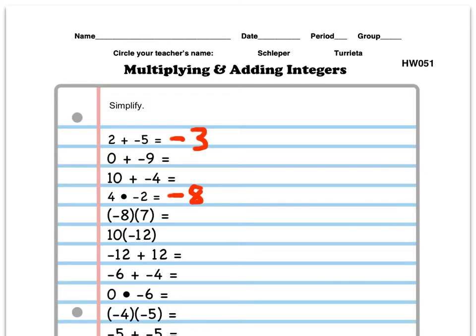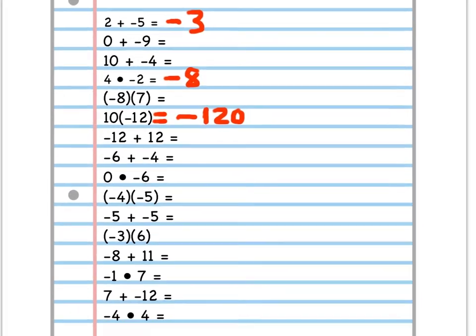I'll do one more here from the top. In this problem here, we have 10 on the outside of a parentheses of negative 12. Well, that essentially means 10 times negative 12. Well, I have a negative times a positive I know will give me an answer of a negative. And then 10 times 12 is 120. We're going to go ahead and move on to the bottom of the page.